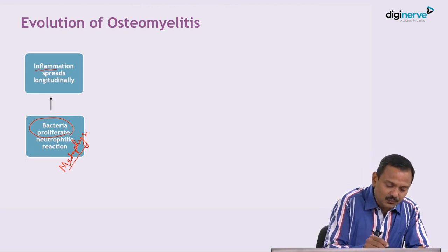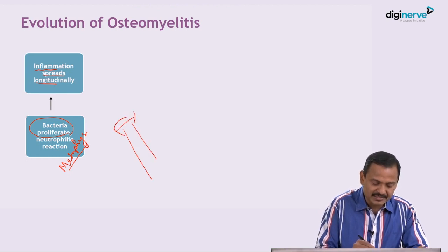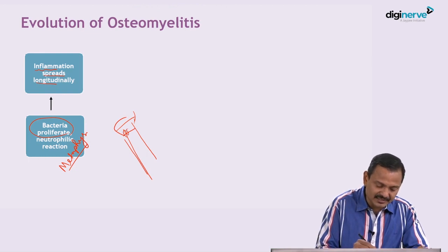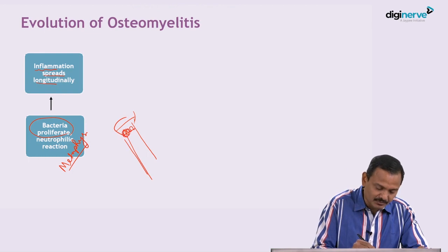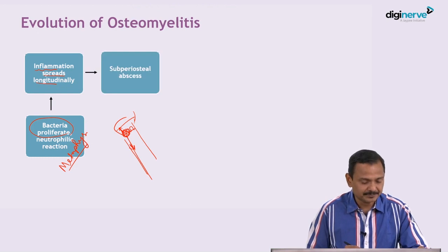This inflammation will spread longitudinally. If you can recall a bone, there is epiphysis, metaphysis and diaphysis. In the metaphysis region there is inflammation which is forming a small abscess. It can extend longitudinally up or down.